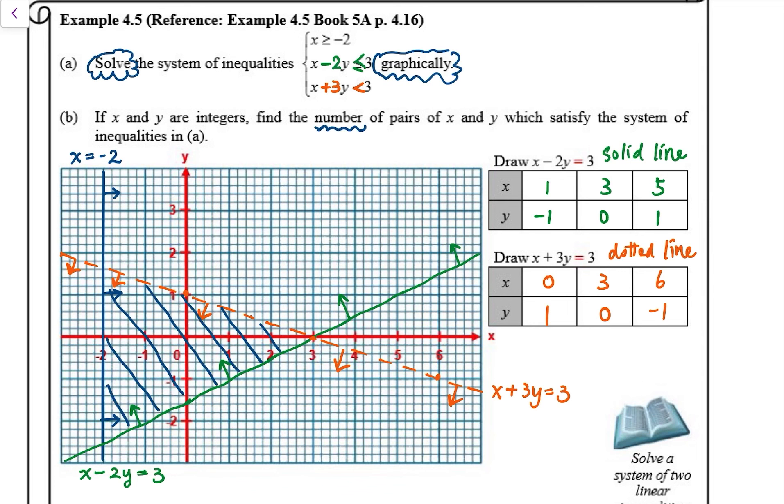Part B, if x and y are integers, find the number of pairs of x and y which satisfy the system of inequalities in part A. So we have to consider integral values of x and y. So I'll be indicating these pairs of x and y using some dots in the figure.